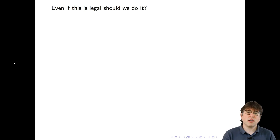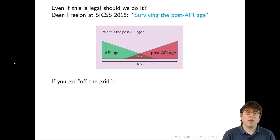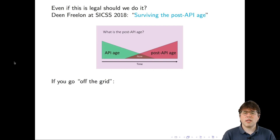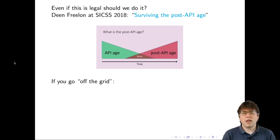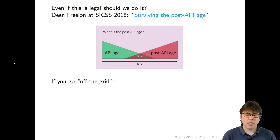Whether it's illegal or not, many researchers face the question of whether they should violate the terms of service. If you're thinking about doing it, I would highly recommend watching the talk that Dean Freelon gave at IC2S2 2018 called 'Surviving the Post-API Age.' His argument is that APIs are getting shut down, and increasingly researchers who want access to data from web platforms are forced to do scraping and other techniques that he calls going off the grid.